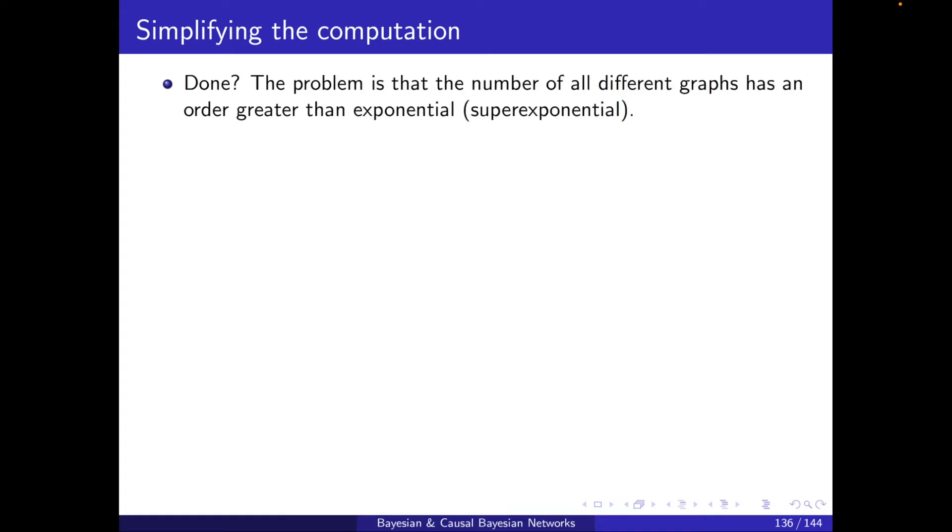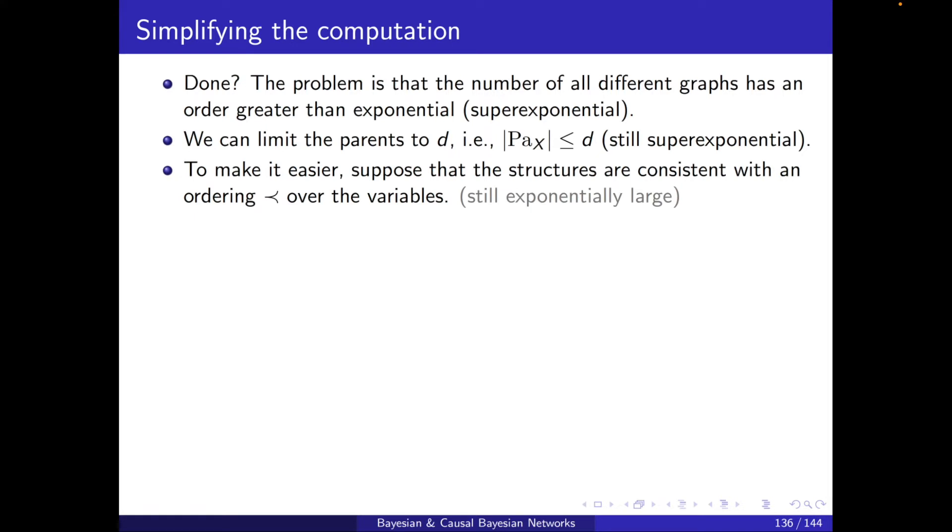Done? Well, not really. The problem is that the number of all different graphs has an order greater than exponential, superexponential. And a way to tackle this problem, as usual, is that we can limit the parents to d, say parents of X less than or equal to d, but then still this is superexponential. We can make it easier and suppose that the structures are consistent with some ordering over the variables. This is not superexponential anymore, but still it is exponentially large. But it's better than superexponential.